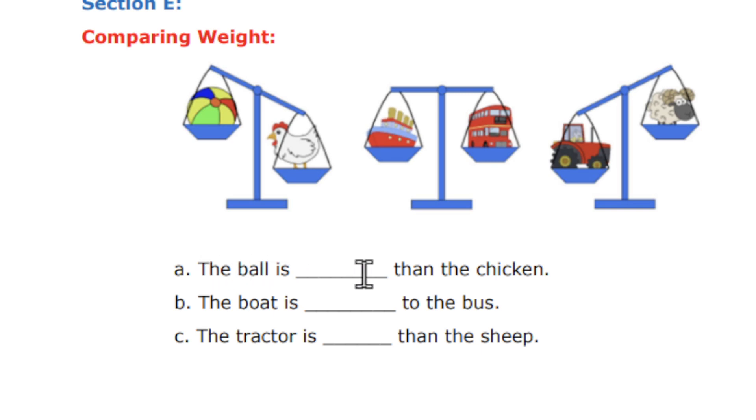So the question is, the ball is dashed than the chicken, the boat is dashed to the bus, the tractor is dashed than a sheep. So you have to find whether heavier, lighter or equal.